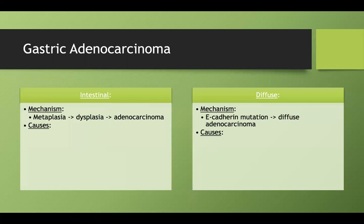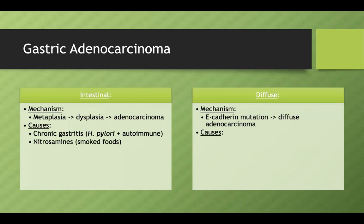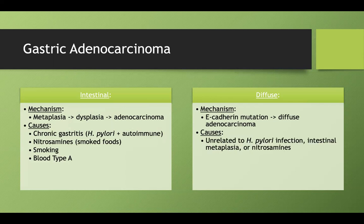Let's talk about risk factors. For the intestinal subtype, it's going to be things that cause chronic inflammation, which can cause metaplasia or dysplasia. These include chronic gastritis, smoked foods, smoking, and interestingly, blood type A is also a risk factor. For diffuse gastric adenocarcinoma, it's not related to any of these risk factors — it's just a spontaneous E-cadherin mutation.